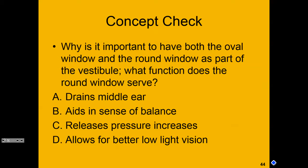Concept check: why is it important to have both the oval window and the round window? What function does the round window serve? Options: A — drains the middle ear; B — aids in our sense of balance; C — releases pressure increases; D — allows for better low light vision. The answer is C: it relieves pressure increases. As the stapes presses against the oval window, pressure increases in the inner ear and causes the round window to bulge outward.